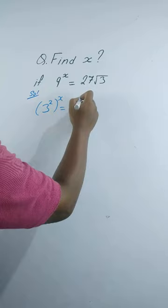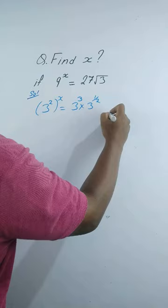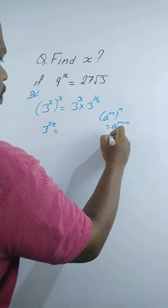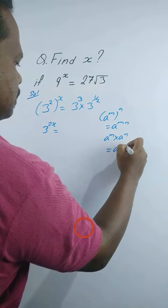Using the exponential rule, a to the power m whole to the power n is equal to a to the power mn, we can write the left side as 3 to the power 2x. Again using the exponential rule a to the power m times a to the power n is equal to a to the power m plus n, we can write the right side as 3 to the power 3 plus 1 by 2.